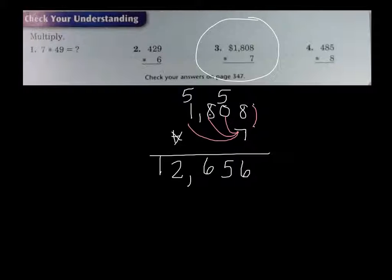Okay, let's see how we did on these. So the first one is 49 times 7. Who can walk us through this problem? Right, so 9 times 7 is 63. Carry the 6. 4 times 7 is 28. Plus 6 is 34.